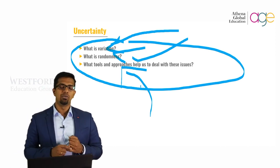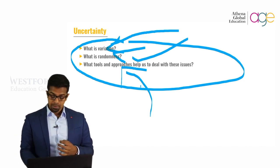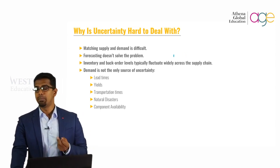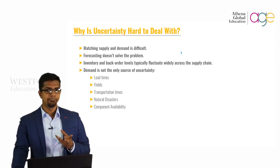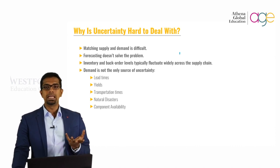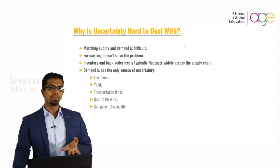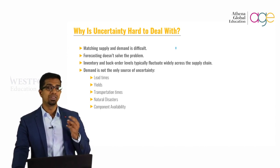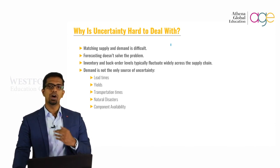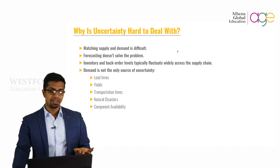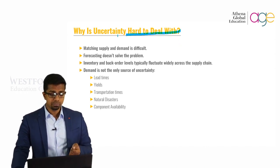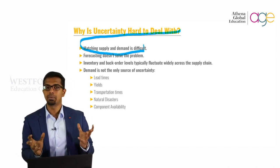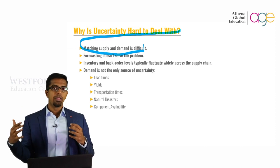What exactly do variation, randomness, and tools and approaches have to do with your supply chain? Variation is nothing but the variation in demand or the variation in supply. If you are selling mangoes, there is a basic principle that there needs to be demand for mangoes. At the same time, you have to ensure a proper supply of mangoes to meet that demand — this goes down to the fundamentals of economics. In your supply chain, there is always variation in terms of demand and supply. Going back to mangoes, 100 people may like mangoes today, 80 people may like them tomorrow.